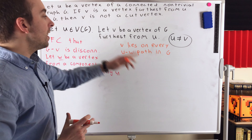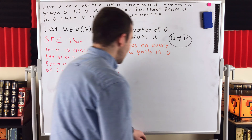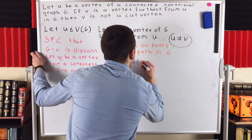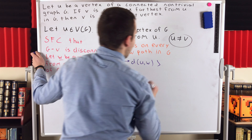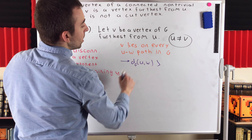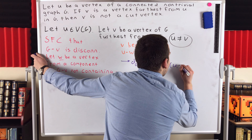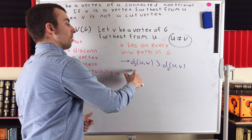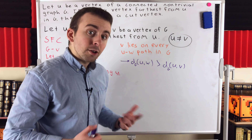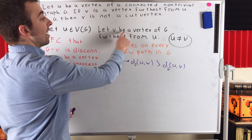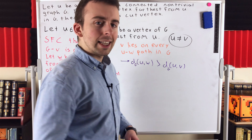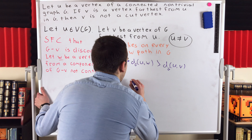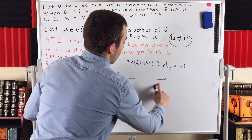V lies on every u-w path in g — and this almost gets us to our contradiction. This implies that the distance from u to the vertex w in g is greater than the distance from u to v in g, because v lies on every u-w path in g. So the distance from u to w is greater than the distance from u to v, which contradicts the defining characteristic of v — which was that it is a vertex of g furthest from u.